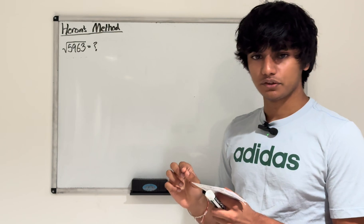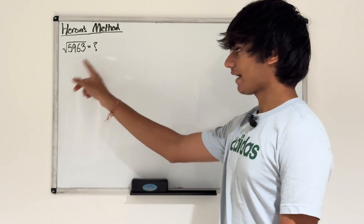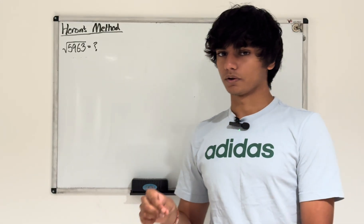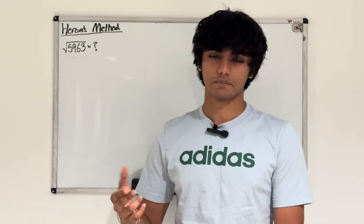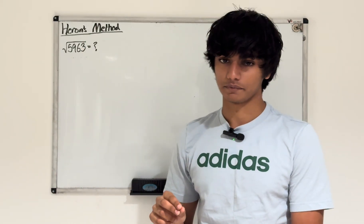Heron's method is actually used in modern computing, a variation of it is used in modern computing and software to find the value of square roots. In older technologies such as TI calculators or in old 3D games such as Quake 3, this exact method is used to compute the value of square roots.